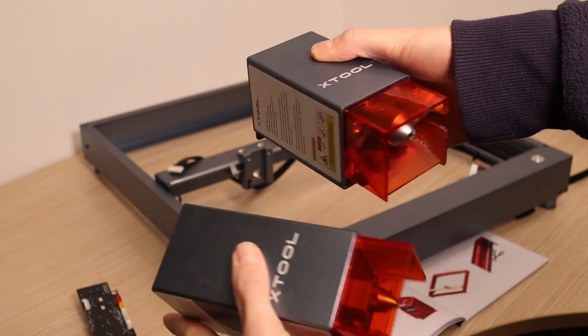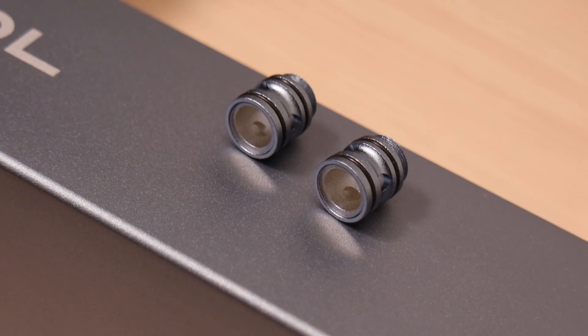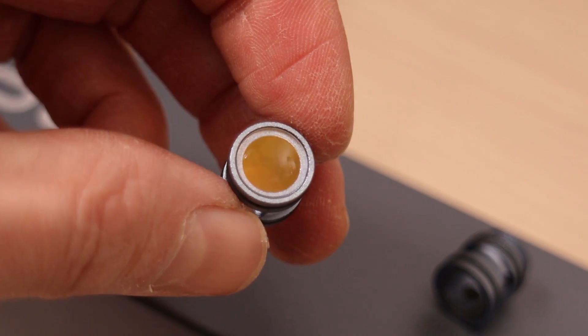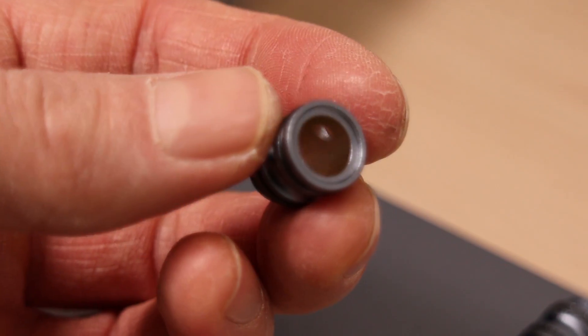This module also has a replaceable lens and you get two spare lenses with the kit for keeping the machine operating for a long time. This is a great feature which we already saw with Sculpfun S30 a few months ago.